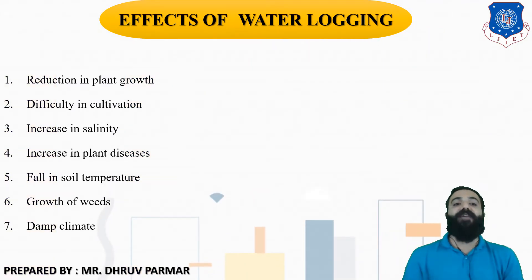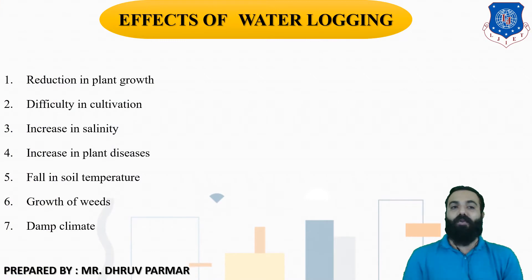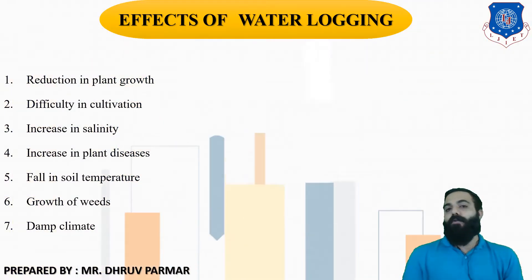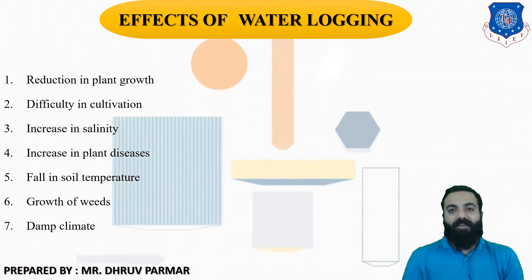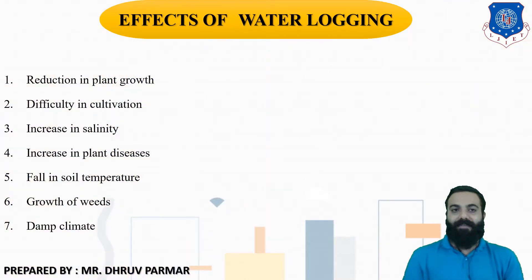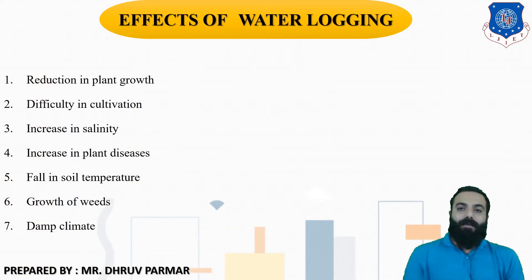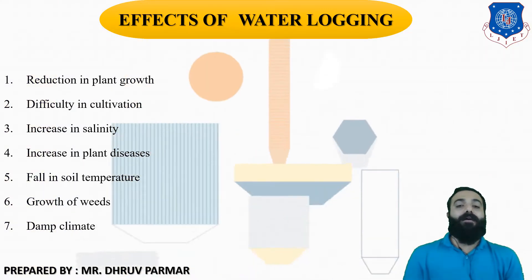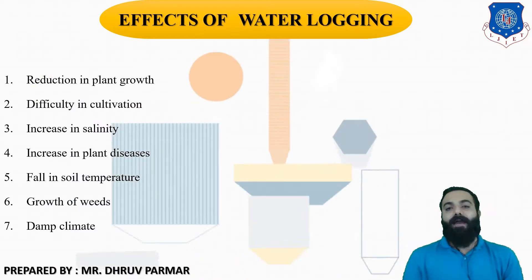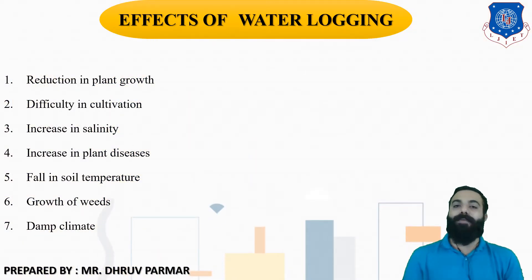The effects of waterlogging include: first, reduction in plant growth. There are three things required for plant growth — sun, air, and water. In waterlogging, air circulation stops, so the plant will die or wilt and the growth of the plant will be reduced.